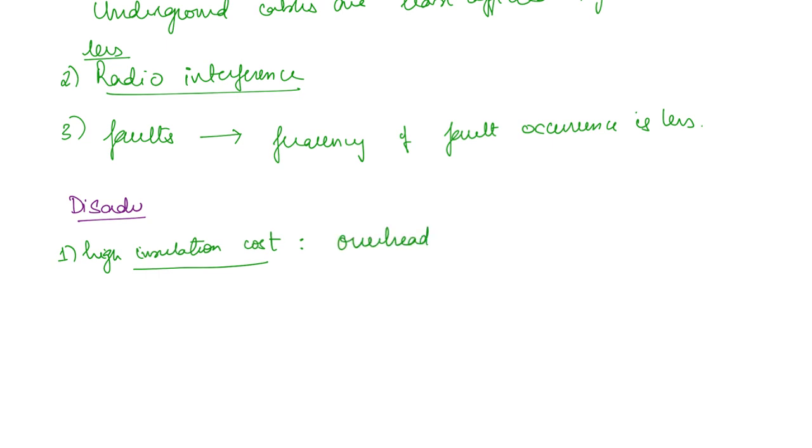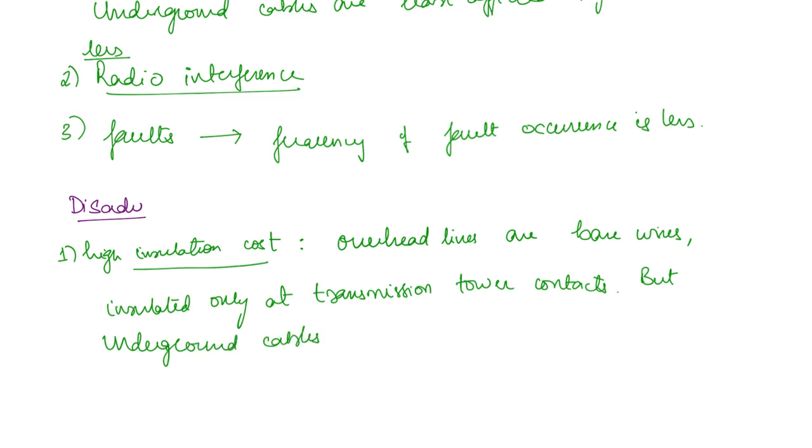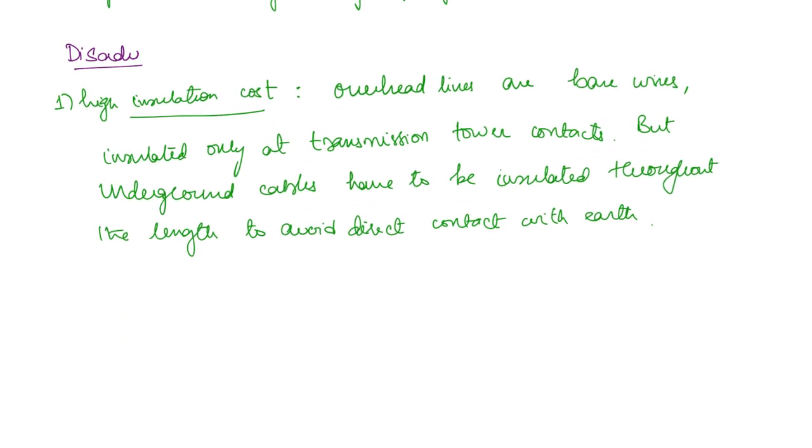Overhead lines are bare wires insulated only at transmission tower contacts. But underground cables have to be insulated throughout their length to avoid direct contact with earth.